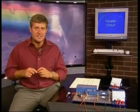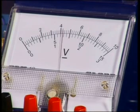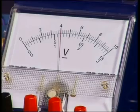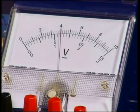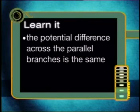Let's see now what the potential difference will read across each resistor in the parallel combination. I will start with resistor 1. Can you see that resistor 1 is measuring 6 volts? And now for resistor 2 — can you see that the reading is also 6 volts? Do you see that the potential difference across each branch in the parallel circuit is exactly the same? This is very important, so please learn it: the potential difference across the parallel branches is the same.